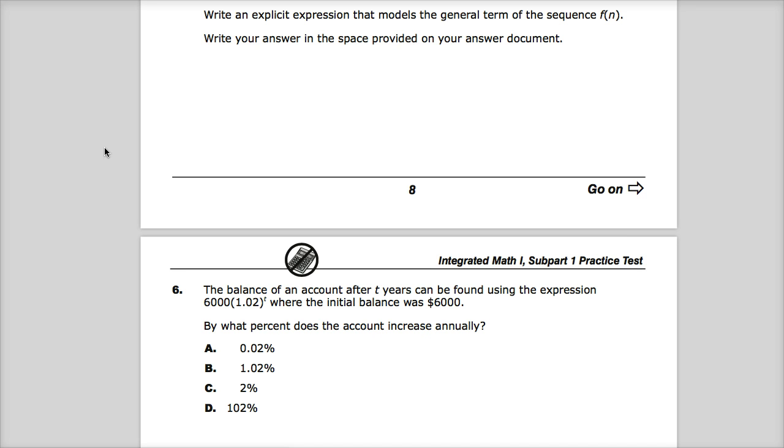The balance of an account after t years can be found using the expression 6,000 times 1.02 to the t, where the initial balance was 6,000. By what percent does the account increase annually?